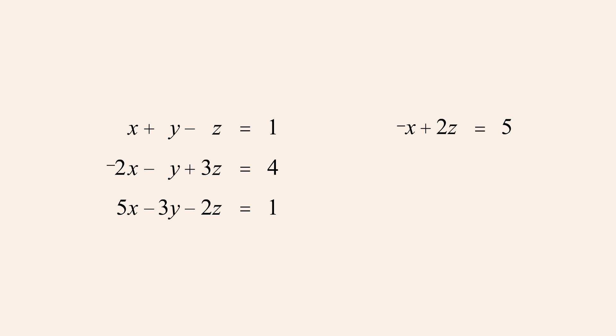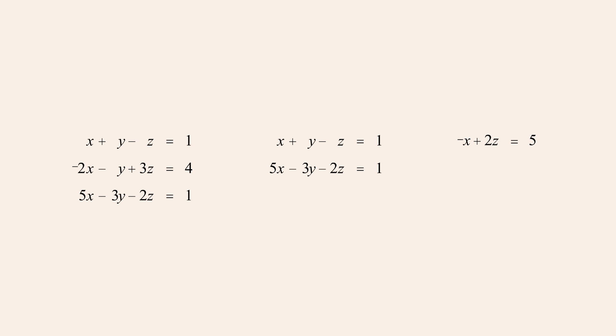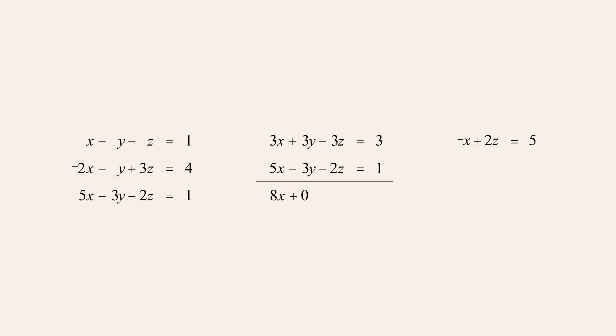In order to create a system of two equations in two variables with a unique solution, the second equation must be different from the one we just created. So we must use a different pair of equations than we used to produce the first equation. This time, instead of adding the first and second equations, we could add either the second and third equations or the first and third equations. So let's use the first and third equations. We want to once again eliminate y so that we end up with another equation in x and z. We can do this if we first multiply the top equation by three before adding the equations. This gives us the second equation in x and z.